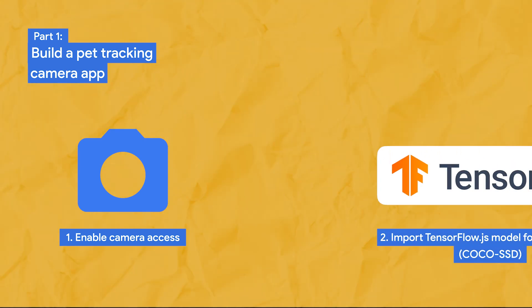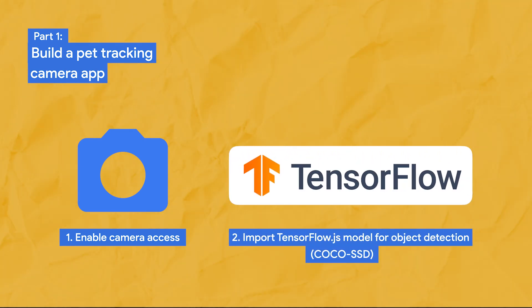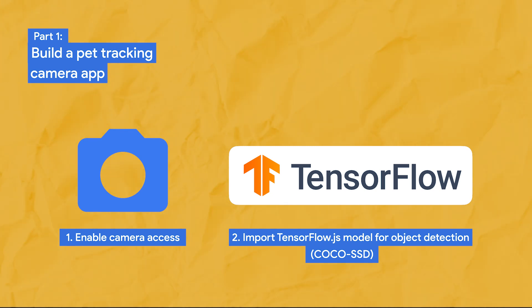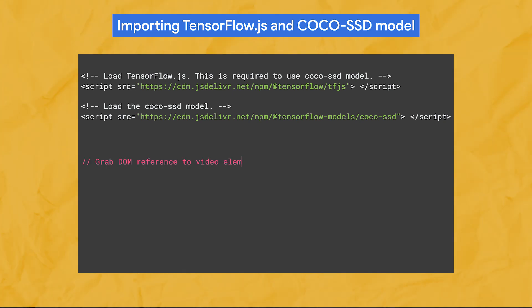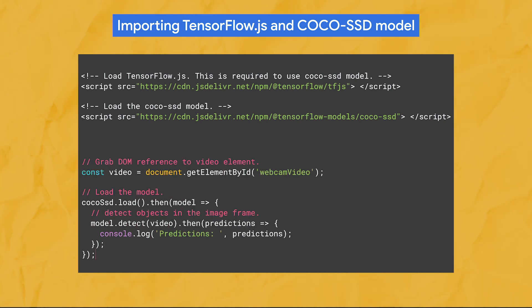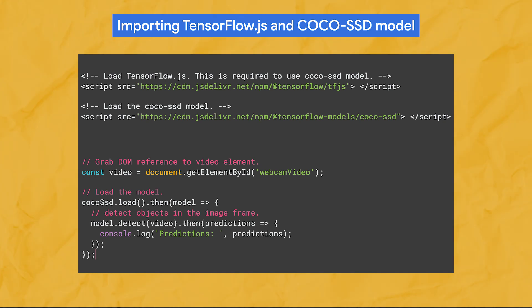Let's talk about the actual front-end application that tracks animals. The first step is to enable webcam access and load a TensorFlow.js model for object detection. We'll use the CocoSSD model that recognizes 80 common household objects in any picture you pass to it. Importing TensorFlow.js and the model is really simple — we've got two script tag imports for TensorFlow.js and the model itself. Then we grab a reference to the video object rendering our webcam, call cocoSSD.load, and then call model.detect passing the video element to classify the current frame.